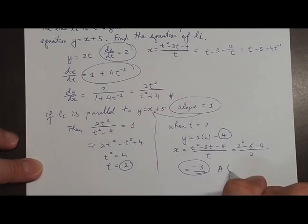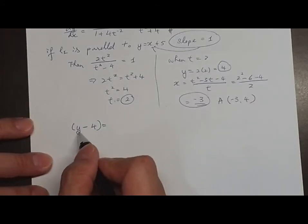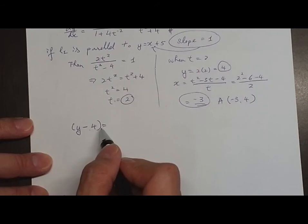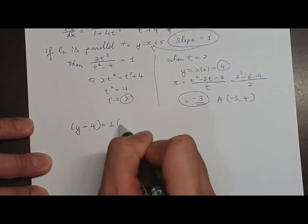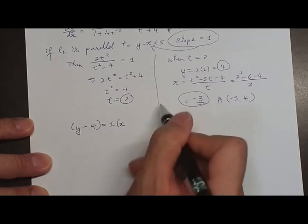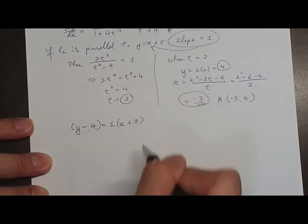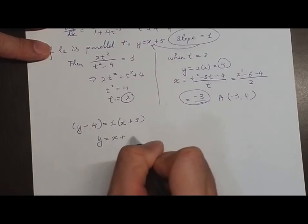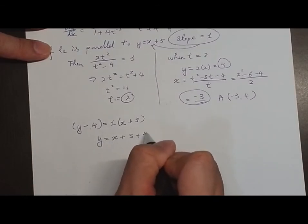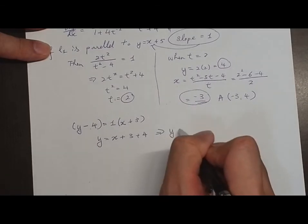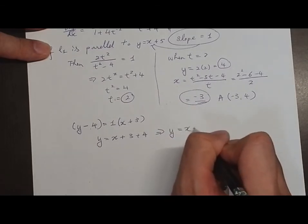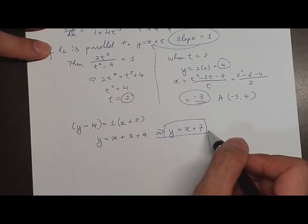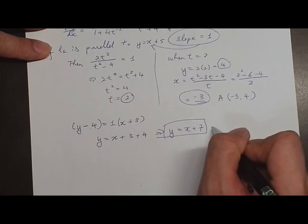So point A is (−3, 4). By the point-slope form, y minus 4 equals 1 times (x minus (−3)), so y minus 4 equals x plus 3. Therefore y equals x plus 7. This is the equation of the tangent when t equals 2, and the equation of L1.